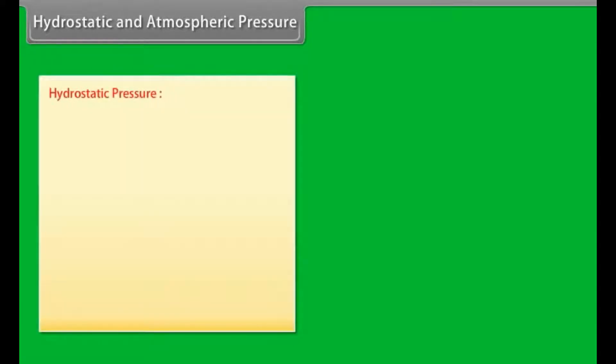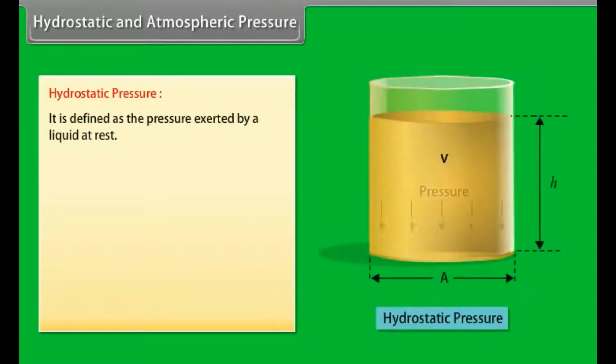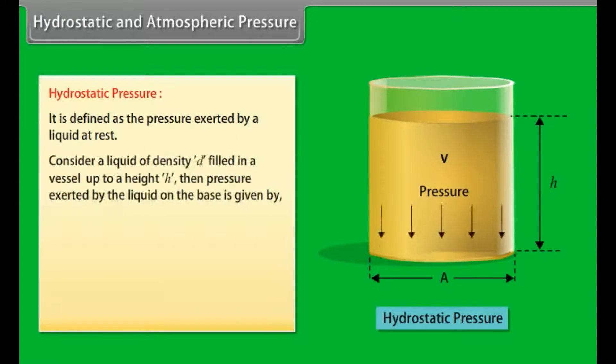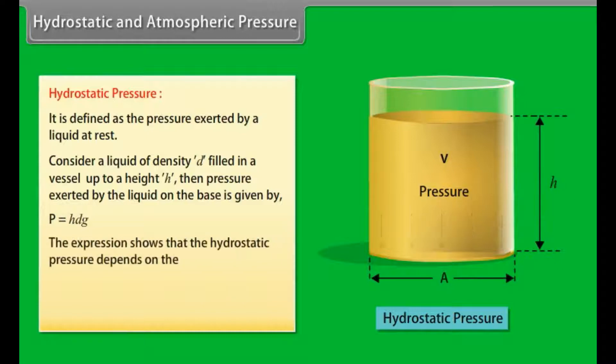Hydrostatic pressure is defined as the pressure exerted by a liquid at rest. First, consider a liquid of density D filled in a vessel up to a height H. Then, pressure exerted by the liquid on the base is given by P = HDG. The expression shows that the hydrostatic pressure depends on the vertical height of the liquid and density of the liquid.